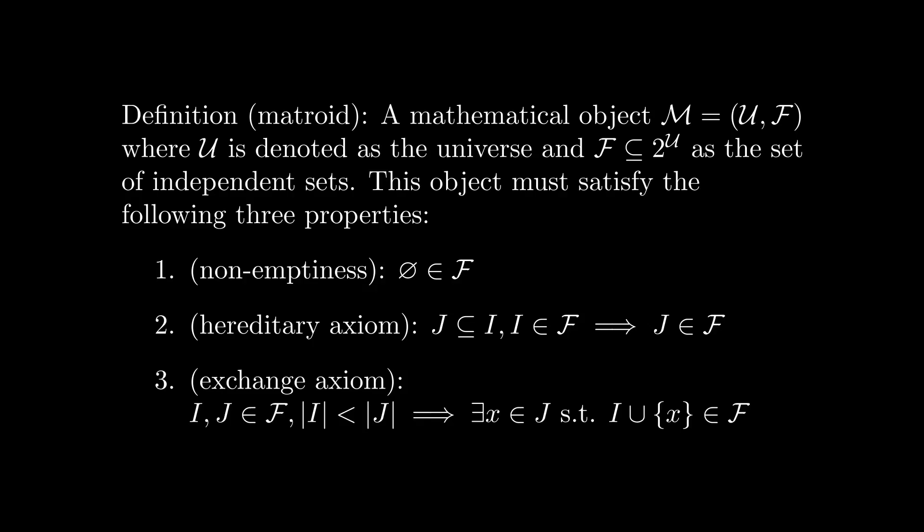The first is that the empty set is in f. This means that f is always non-empty. The second is that any subset of an independent set in f is also in f. This is often referred to as the hereditary axiom. Lastly, we have that for any two independent sets i and j in f, if the size of i is greater than the size of j, then there exists some element in j which can be added to i and produce an independent set. This is referred to as the exchange axiom.